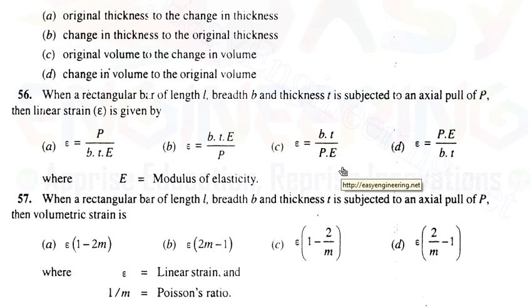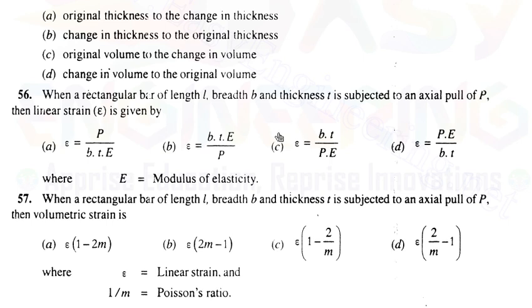Question 56: When a rectangular bar of length L, breadth B, and thickness T is pulled axially, the linear strain equals stress upon modulus of elasticity. The correct answer is stress upon area times elasticity.